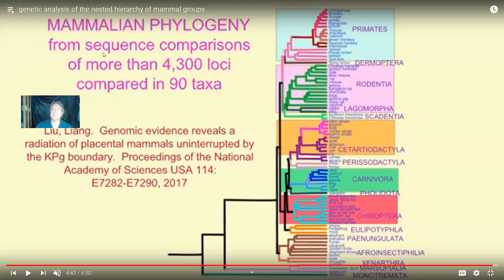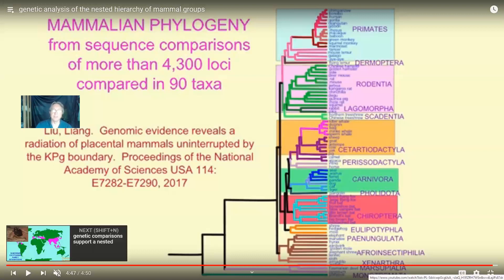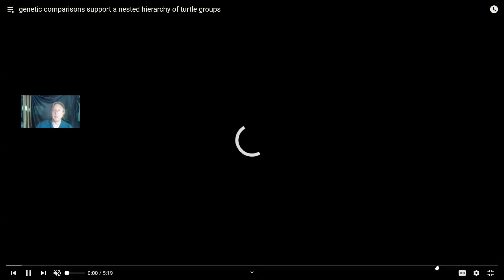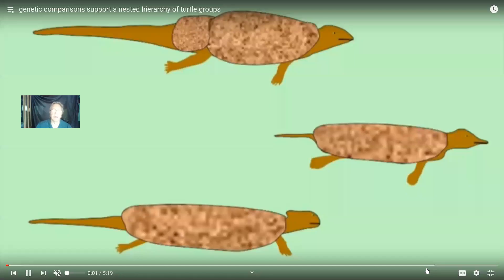And so there can be studies made — one gene, two genes, or by now thousands of sequences have been collected. This is an enormously powerful study using thousands of sequences to support the grouping of these organisms in a way which overwhelmingly supports the evolution model and refutes the creation model.